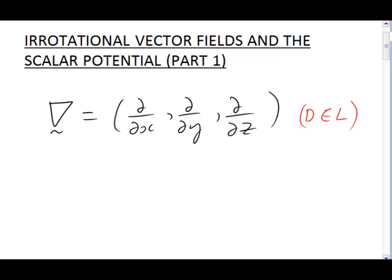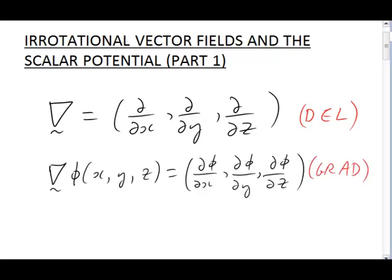Because del is a vector, we can use it to perform operations quite normally undertaken by vectors, operations such as the dot product or the cross product, or simply scalar multiplication. So for example, if phi is a scalar field, depending on space position x, y and z, we can write down the grad of phi. Grad is short for gradient, so as the name suggests, the grad of phi tells us how fast phi is changing in various directions.